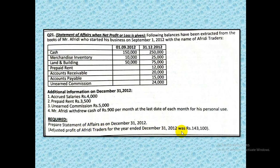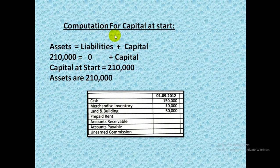We are required to prepare the statement of affairs, that is called the balance sheet, on December 31. In the owners equity section we will directly put up the figure which is the net profit of Afridi Traders for December 31, 2012. This is the amount of net profit which we will use in the preparation of the statement of affairs.